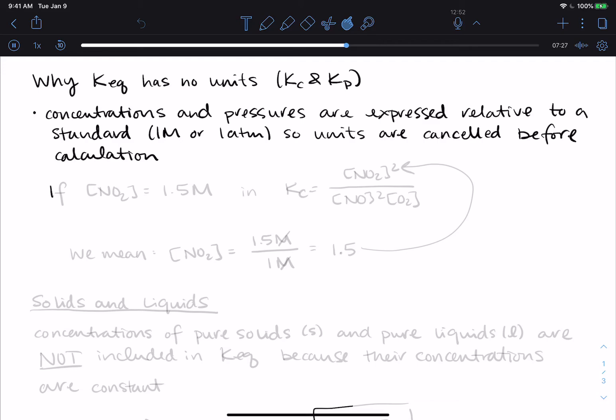So if, for example, the concentration of NO2 is equal to 1.5 molar, in a reaction that has an equilibrium constant expression of NO2 squared over NO squared times O2, what we mean is that the NO2 concentration is 1.5 molar relative to a one molar standard. This cancels out the units. And then the value of 1.5 is what I would take to plug into my expression.